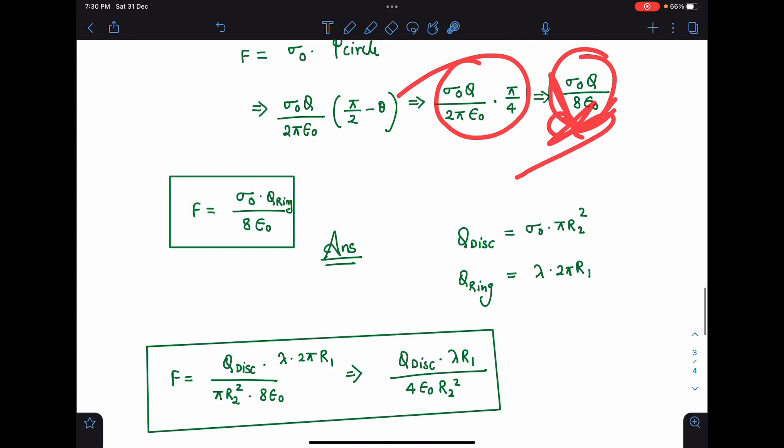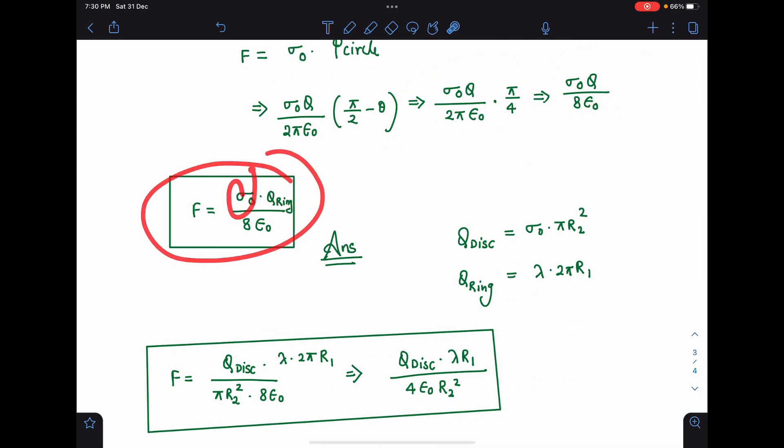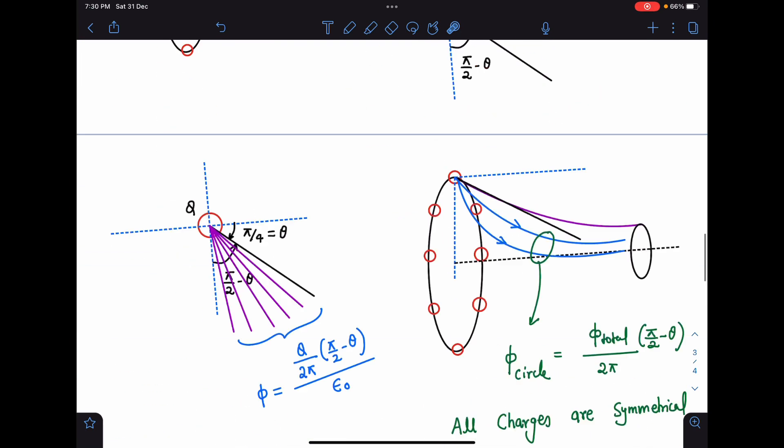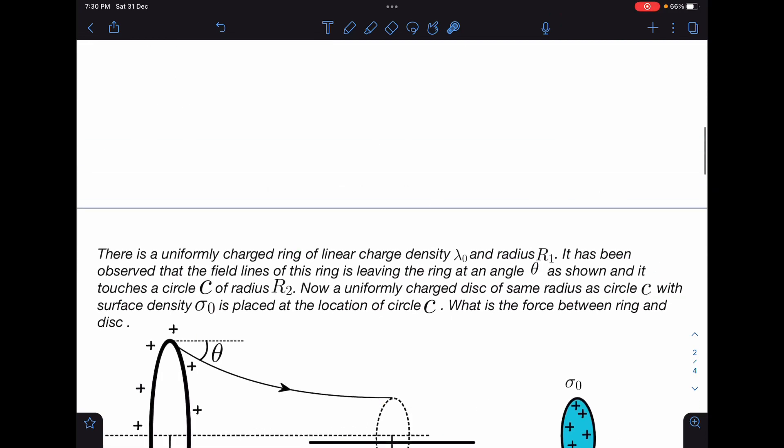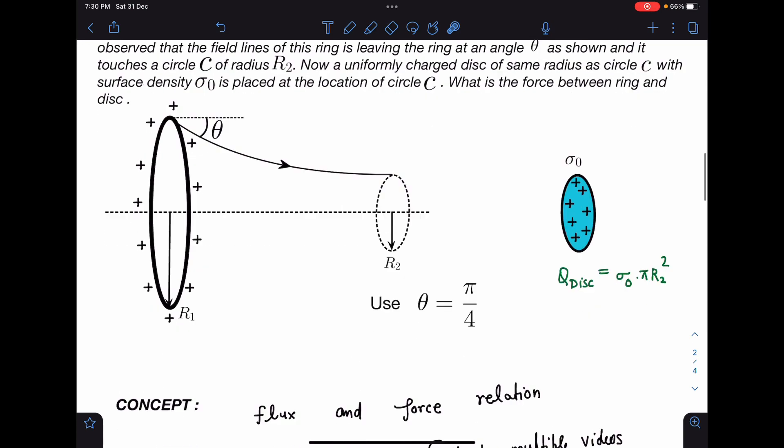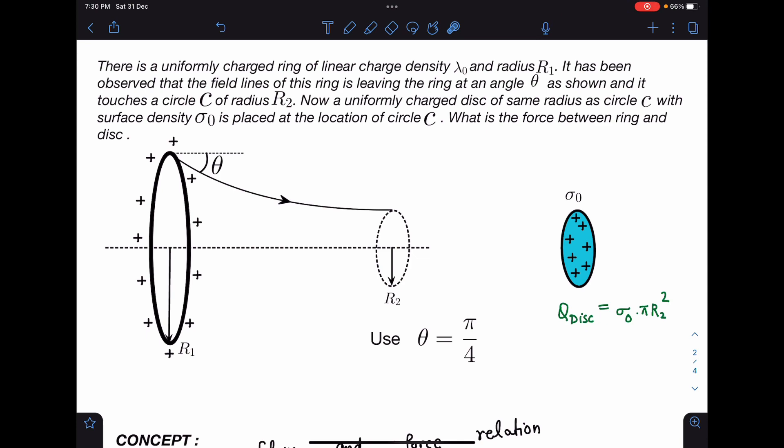In remaining different forms we can write, by the way, this is σ of disk and q of ring. So q disk I can write as σ₀ π r₂² and q of ring I can write λ₀ × 2π r₁. They can give different values but logic remains the same. I hope guys you have gone through this and you have liked this problem. I found this problem very beautiful. If you have liked this problem, please share this channel with others and if you haven't subscribed, please subscribe. Thank you for watching.